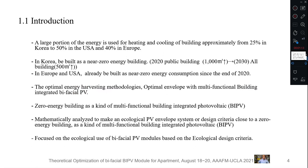A large portion of energy is used for heating and cooling of buildings — approximately from 25 percent in Korea to 50 percent in the USA and 40 percent in Europe. In Korea, new buildings are already required to be built as zero energy buildings. For example, from 2020, public buildings over 1,000 square meters must comply, and by 2030, all buildings over 500 square meters must be zero energy. In Europe and the USA, new zero energy consumption buildings have been required since the end of 2020.